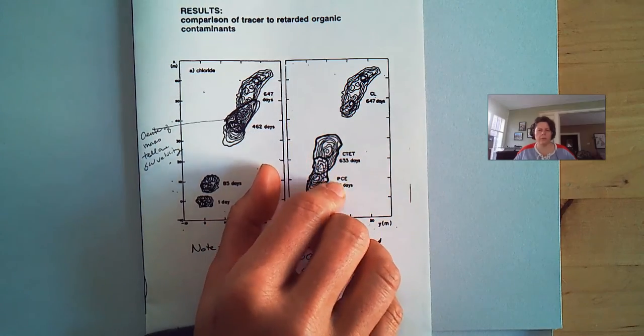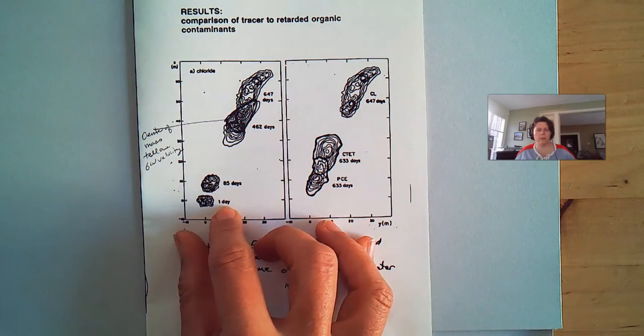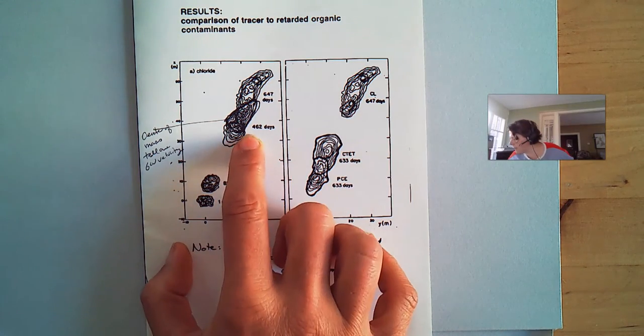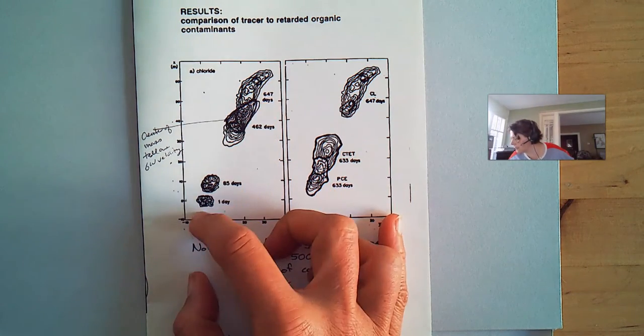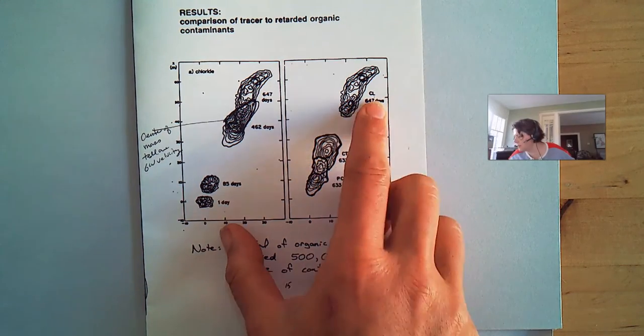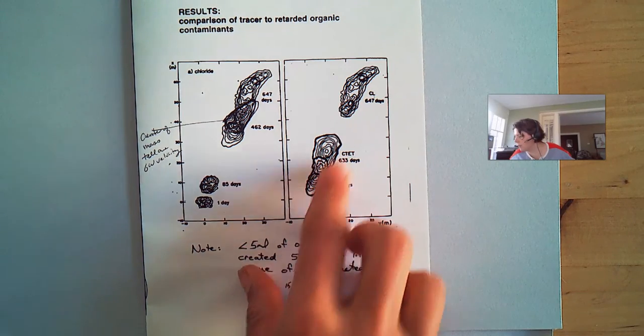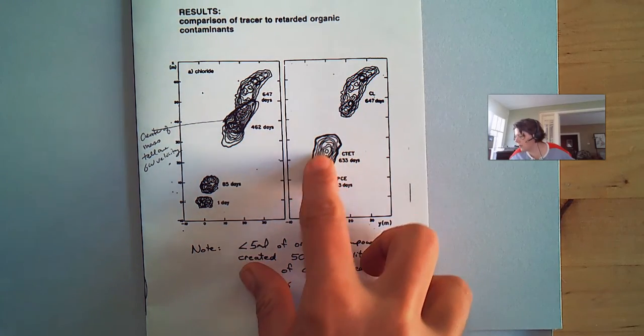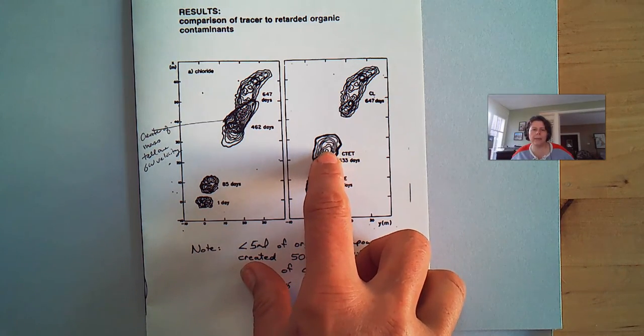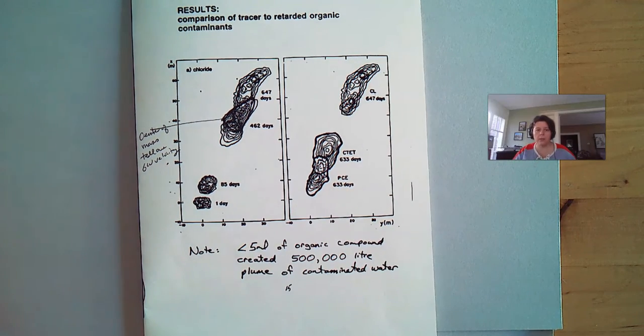When I look at that first example where I said there was no biodegradation, we can look at the chloride concentrations at day 1, day 85, 492, 647, and the center of mass is moving this way. And then if we look at the same day roughly, and we look at where these compounds are, our PCE hasn't really moved very far. Our chloride moved very far. Our carbon tetrachloride is moved right in there. And so we can also look at the center of mass of where these things are relative to the chloride in order to be able to figure out our retardation factors.